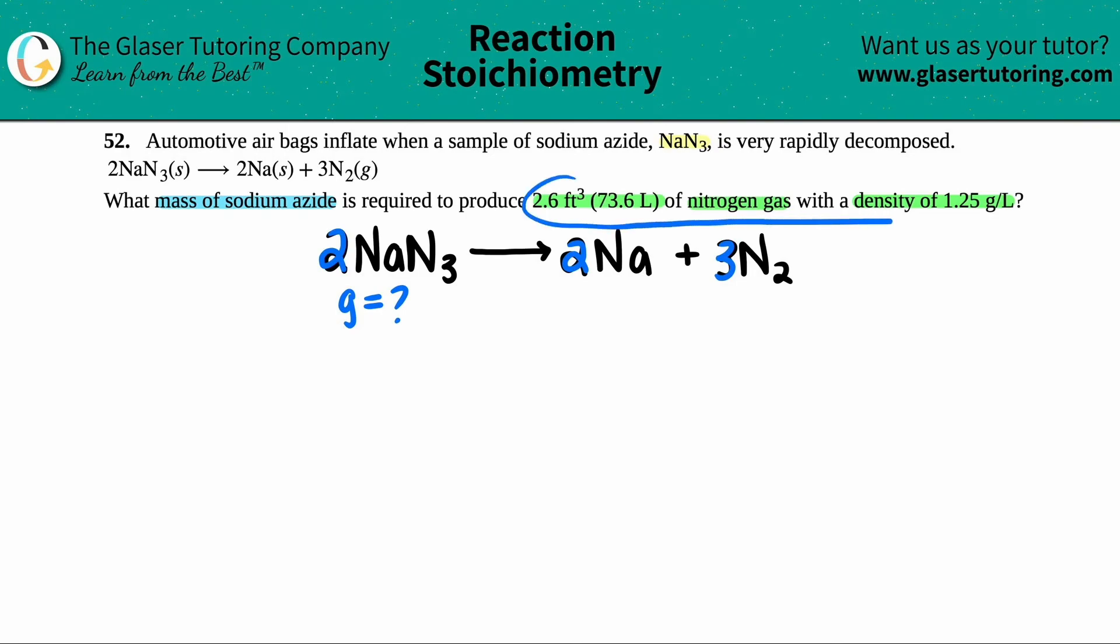Now all of this information is what they started us off with. We're trying to produce 2.6 feet cubed, aka 73.6 liters of nitrogen gas, and this is the nitrogen gas, right? It's the only one that has gas. But nitrogen by itself is a diatomic. So we have 2.6 feet cubed, which is equivalent to 73.6 liters. And they gave us some extra information. They did tell us that the density of the nitrogen gas is 1.25 grams per liter.